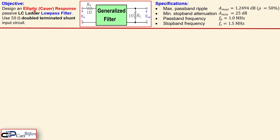The elliptic filter is also called the Cauer filter, named after its inventor. It must be a passive LC ladder filter configuration for this low-pass filter, and we need to use a 50 ohm double-terminated shunt input circuit. We have the generalized filter with a source resistor and a load resistor, both one ohm — normalized values. We need to scale up later to 50 ohm, so our magnitude scaling factor Km must be 50.